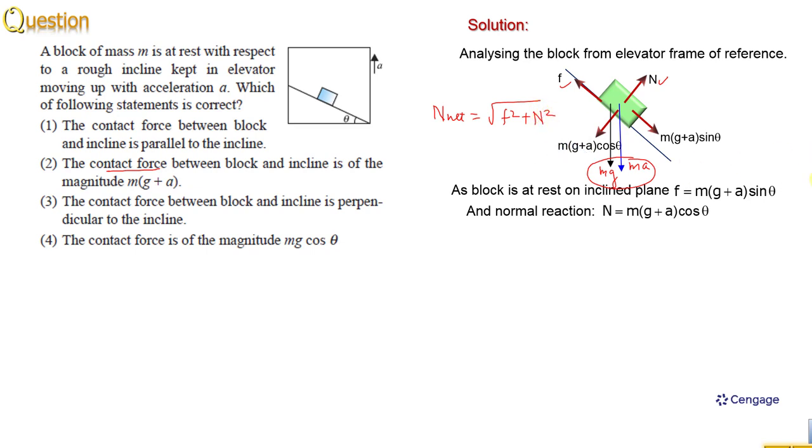Let us write the vector summation. This is the mg plus A sin theta whole square plus mg plus A cos theta whole square. This will be the expression.